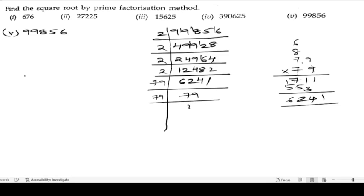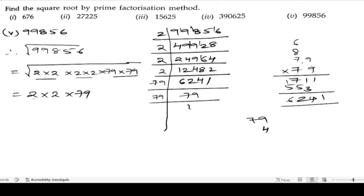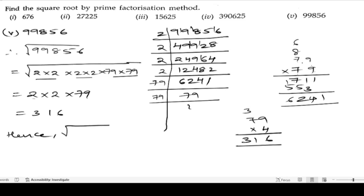Therefore, the square root of 99856 equals the square root of 2 into 2 into 2 into 2 into 79 into 79. Taking pairs as singles: 2 into 2 into 79. Multiplying: 2 twos are 4, and 4 into 79 — 4 nines are 36, 4 sevens are 28 plus 3 is 31 — giving 316. Hence, the square root of 99856 is 316.